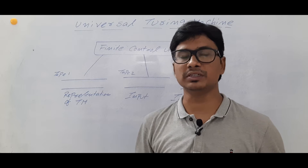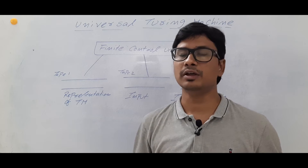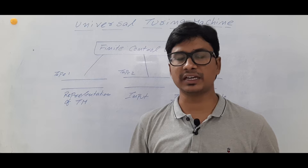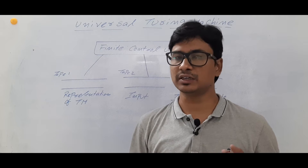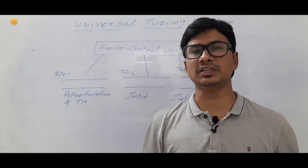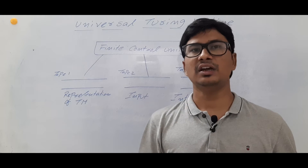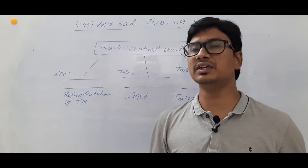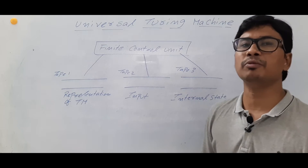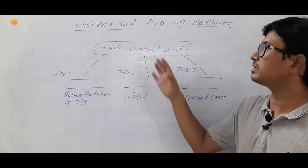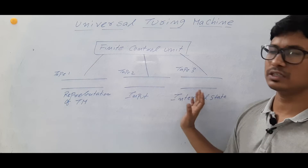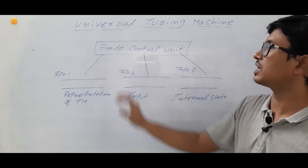Till now we have discussed about the Turing Machine. We have constructed Turing Machines for performing unary addition, unary subtraction, unary multiplication, and unary division. Each Turing Machine is doing a single task. Now if I want to design a Turing Machine such that it will perform all the tasks, then we will call it a Universal Turing Machine.